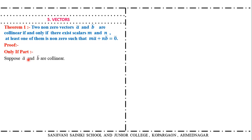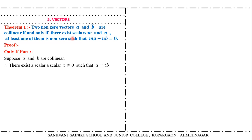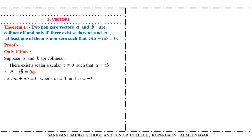Now the only-if part. Suppose A bar and B bar are collinear. If they are collinear then there exists a scalar T nonzero such that A bar is equal to T times B bar. So A bar minus T·B bar equals zero bar, which gives one times A bar plus minus T times B bar equals zero bar. So M equals one and N equals minus T, giving M·A bar plus N·B bar equals zero bar as required.